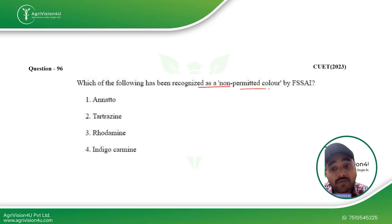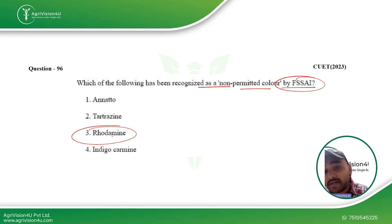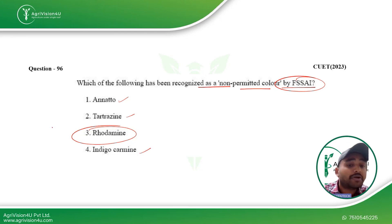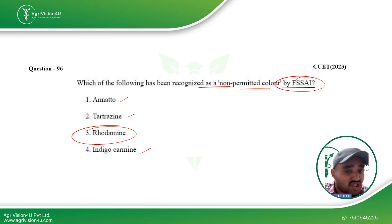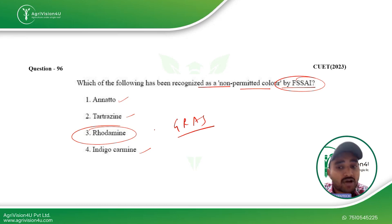Which of the following has been recognized as a non-permitted color by FSSAI? Rhodamine is the non-permitted color. The rest — annatto (used in butter), tartrazine, indigo carmine — are permitted. Rhodamine is toxic and does not fall under the GRAS (Generally Recognized as Safe) category, so be aware that rhodamine is a non-permitted color.